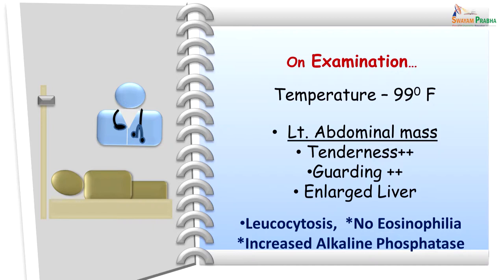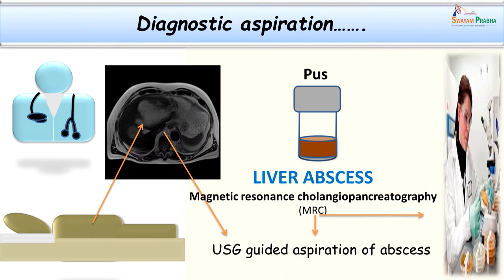On examination, temperature was slightly raised. Abdominal examination revealed a mass, tenderness, and guarding, along with an enlarged liver. Basic hematological investigations showed leukocytosis. Notably, there was no eosinophilia although we were suspecting a parasitic infection — this is one feature to note. There was also increased alkaline phosphatase levels, adding to our supportive findings.